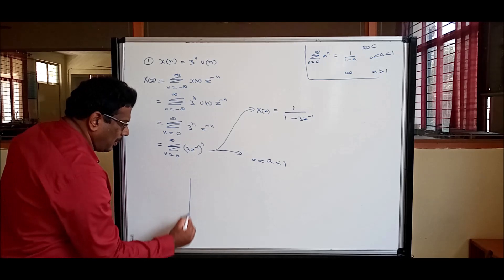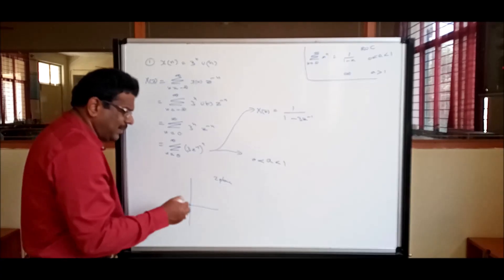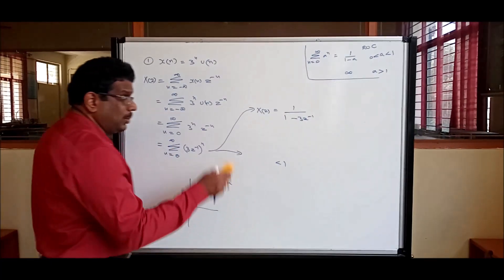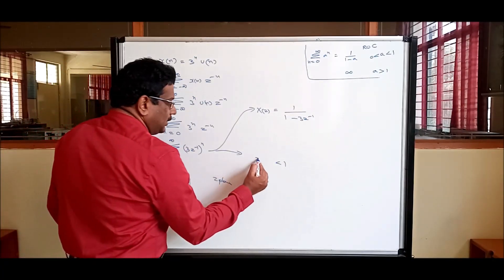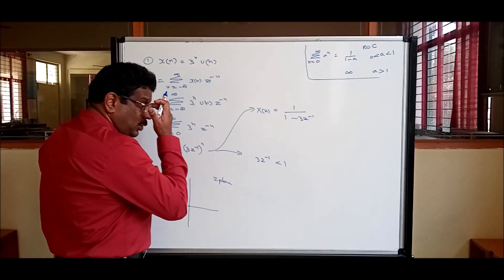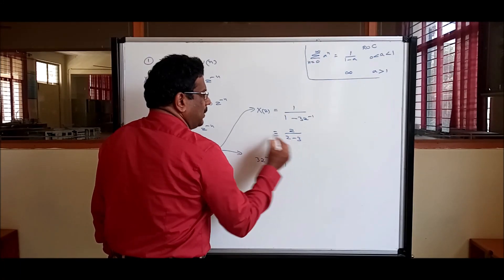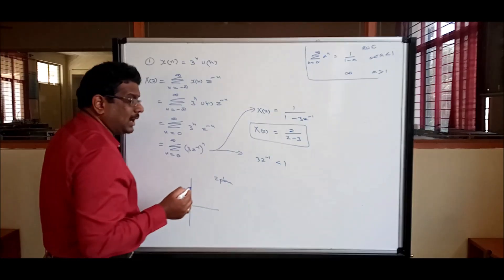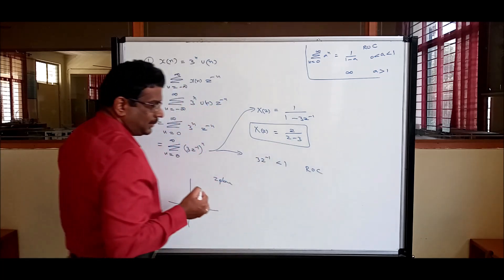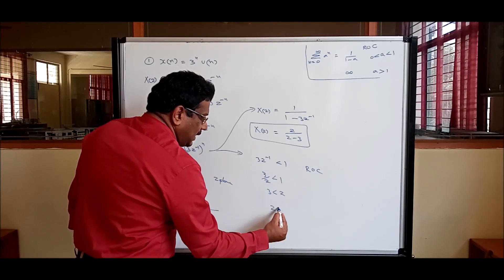In the z-domain (z-plane), values are in polar coordinates so the minimum is 0 — no negative values. Therefore the condition simplifies to |a| < 1, meaning |3z⁻¹| < 1. Simplifying: 1/(1 - 3z⁻¹) can be written as z/(z - 3). This is the final answer. The ROC condition gives 3/|z| < 1, so |z| > 3.